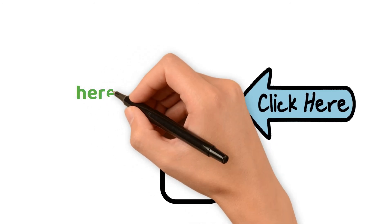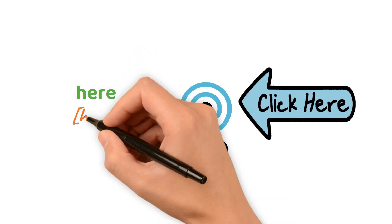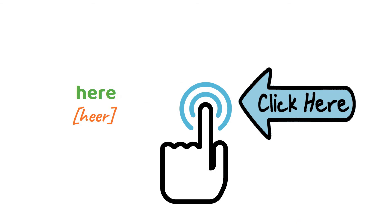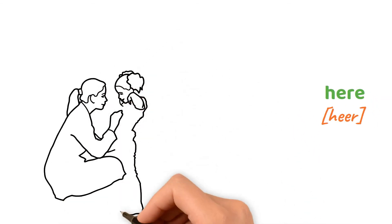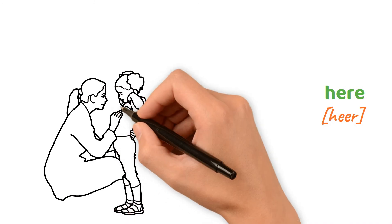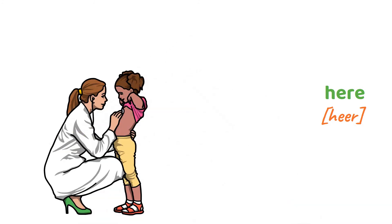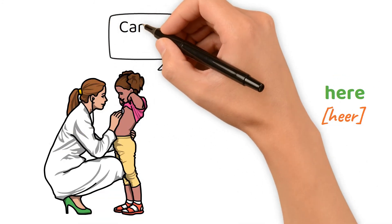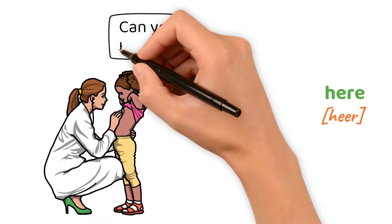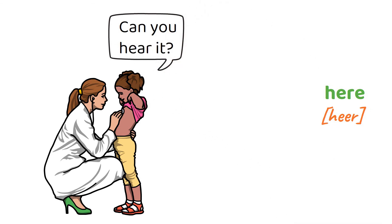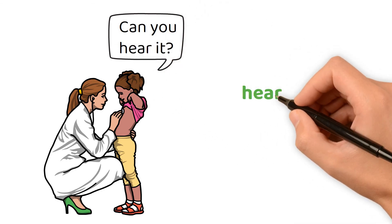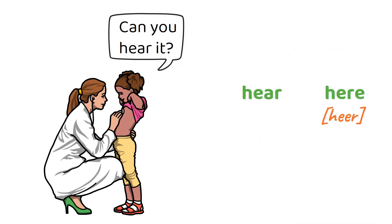Examples. Here — can you hear it? Can you hear it? "Here" and "hear" sound the same but are spelled differently and have different meanings.